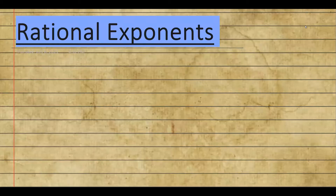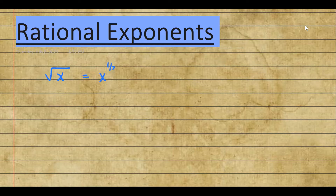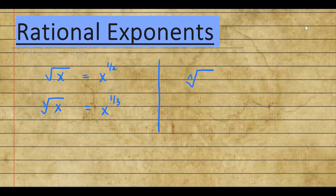In this video, we're going to learn how to simplify expressions that involve rational exponents. We're going to introduce the idea of radicals. If you have the radical of x, you would write that as x to the one-half power. Similarly, the cube root of x would be written as x to the one-third power. In general, the nth root of x, where n is a positive integer greater than one, is simply x to the power one over n.